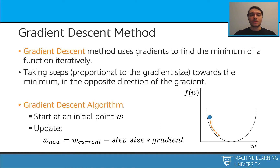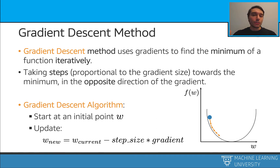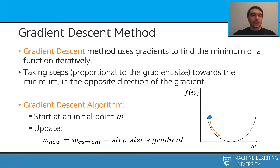Let's introduce the gradient descent algorithm. We learned how gradient works, and now we will put this into play in our optimization problem. Gradient descent uses the gradient and tries to find the minimum of a function. We will do this iteratively, taking multiple steps, and at each step we get closer to the minimum. We start with an initial point w, then update it: the new w equals the current w minus the step size parameter multiplied by the gradient.